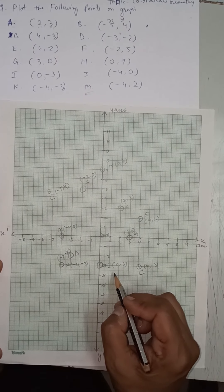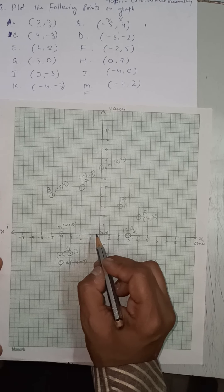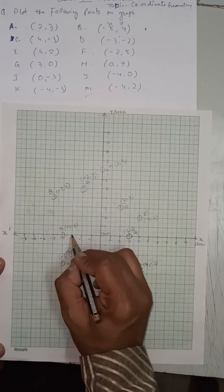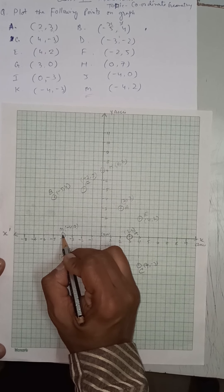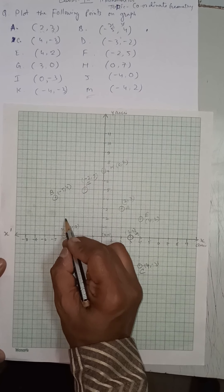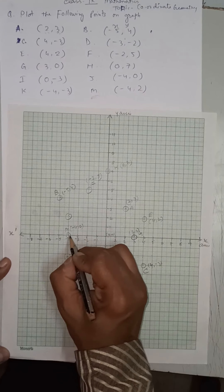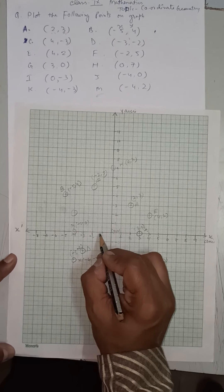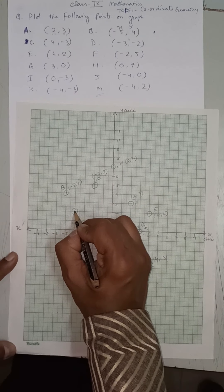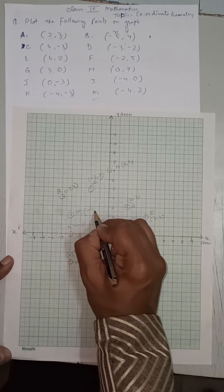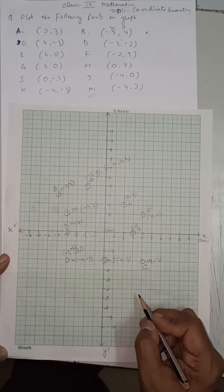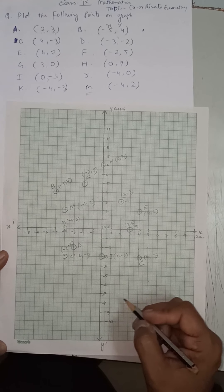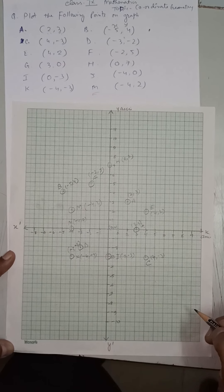Point M is (−4, 2). Minus 4 means x is negative and 2 means y is positive. So x: minus 1, minus 2, minus 3, minus 4; then upward 1, 2. We make a point there — that is point M at (−4, 2). In this way we plot all the points. You have to practice how to plot points in different forms. I will give you more questions in the next assignment. Thank you.